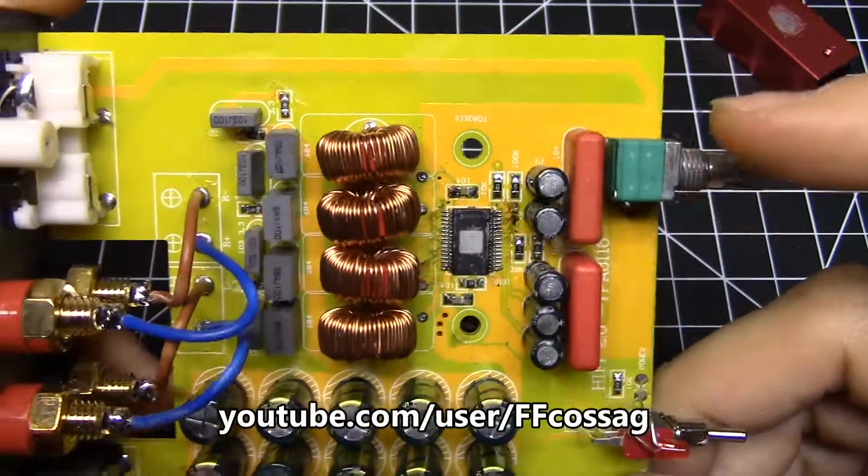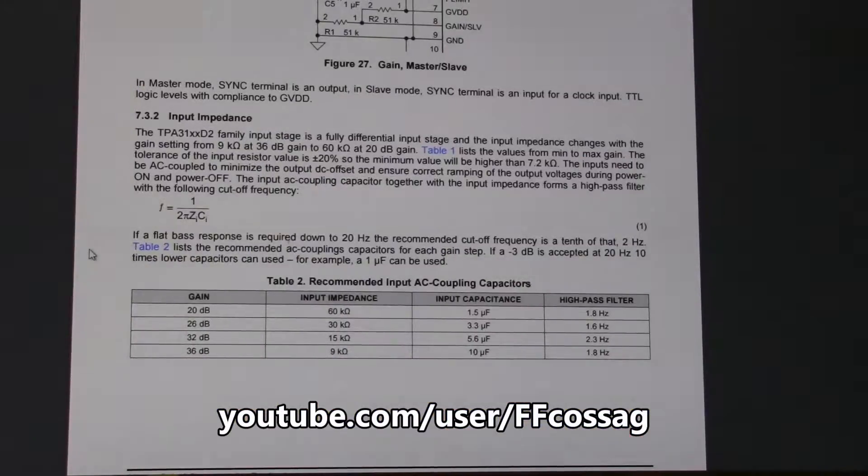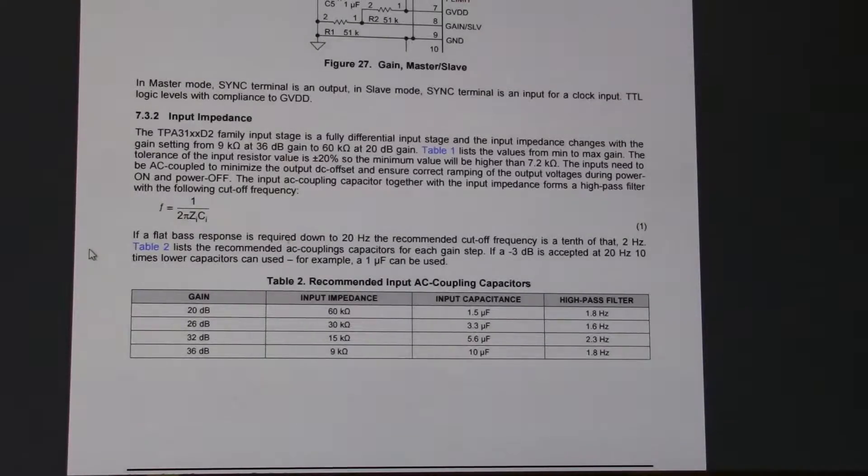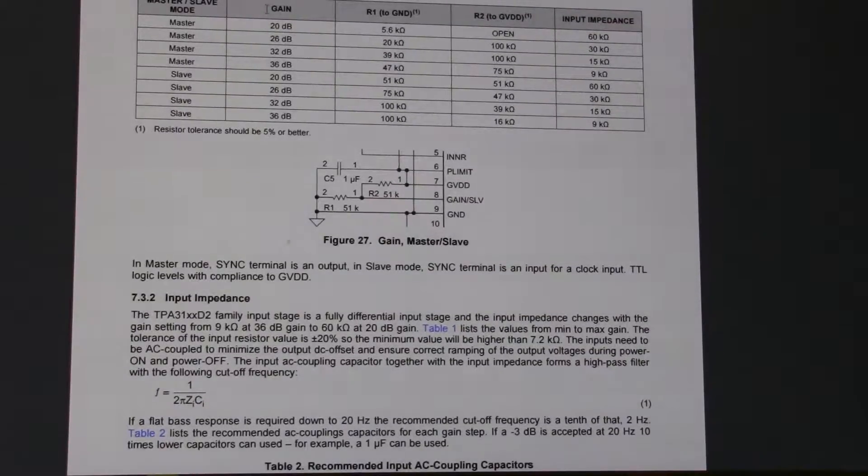You check the data sheet and you can alter the resistance. This is the TPA 3116 data sheet showing how to configure the input gain. These Breeze amps are all configured at 32 dB of gain.